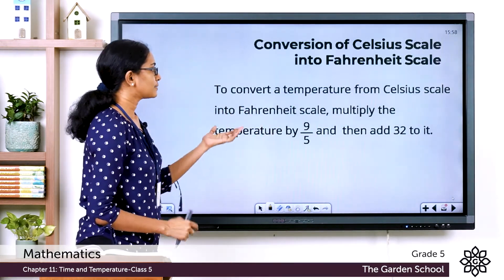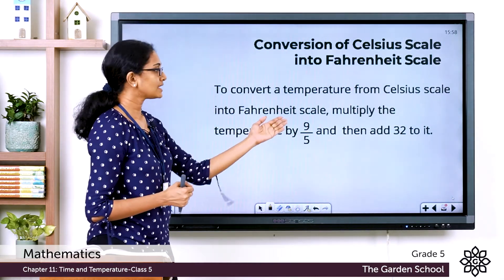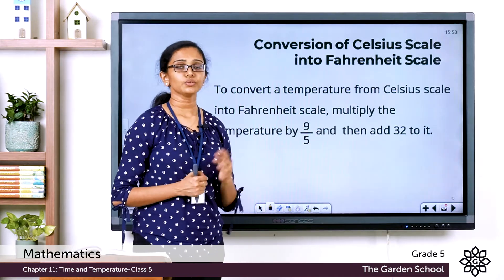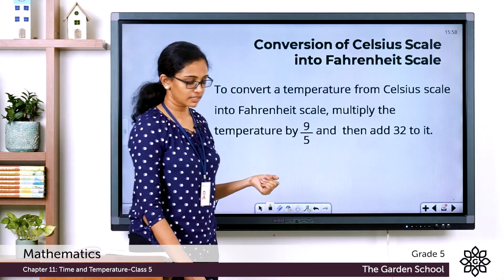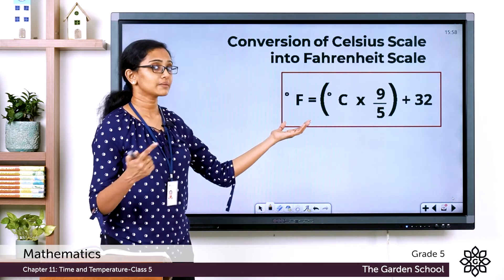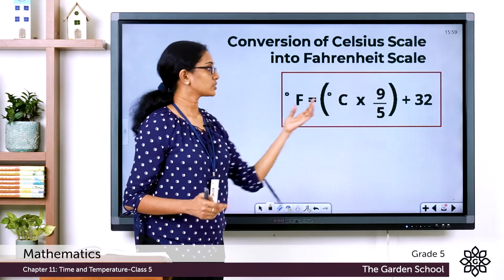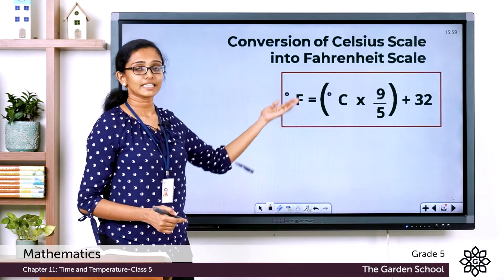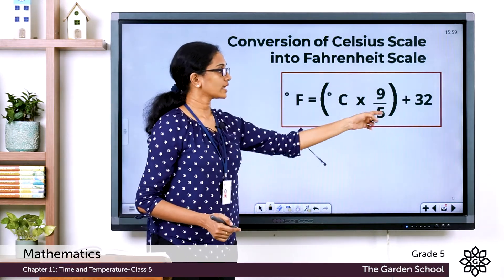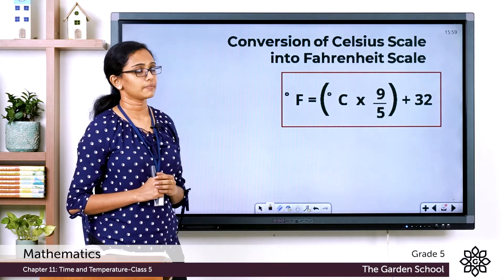To convert a temperature from Celsius scale into Fahrenheit scale, you have to multiply the temperature by 9 by 5 and then add 32 to it. We can express this using the formula: Degree Fahrenheit is equal to degree Celsius multiplied by 9 by 5, the whole thing plus 32. Please note down this formula in your notebook and learn it by heart.